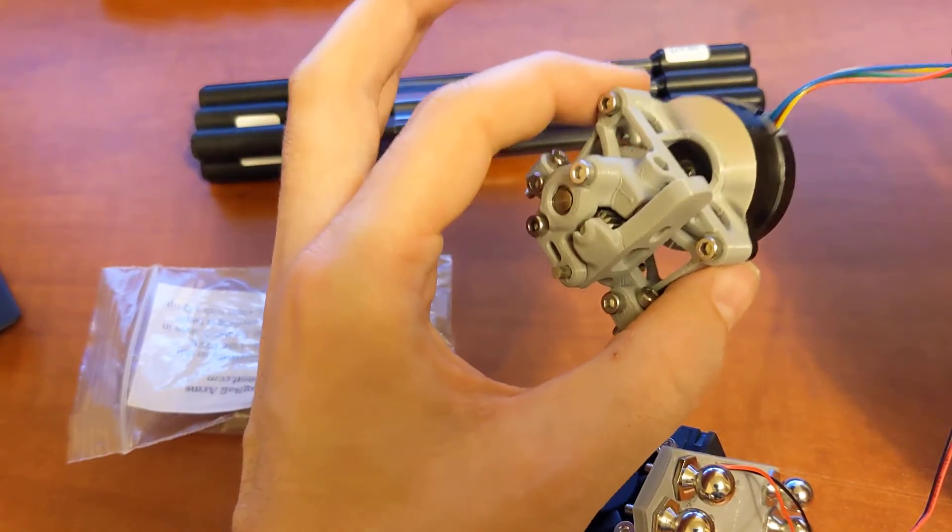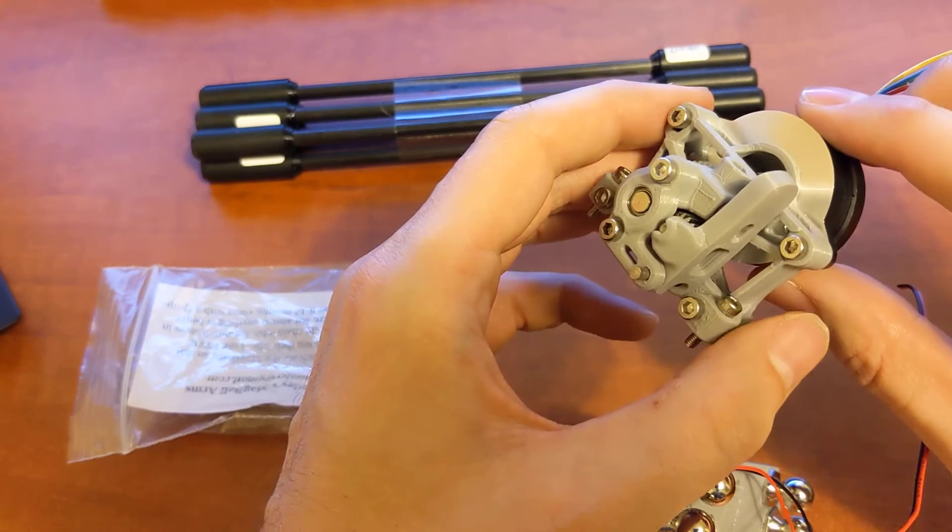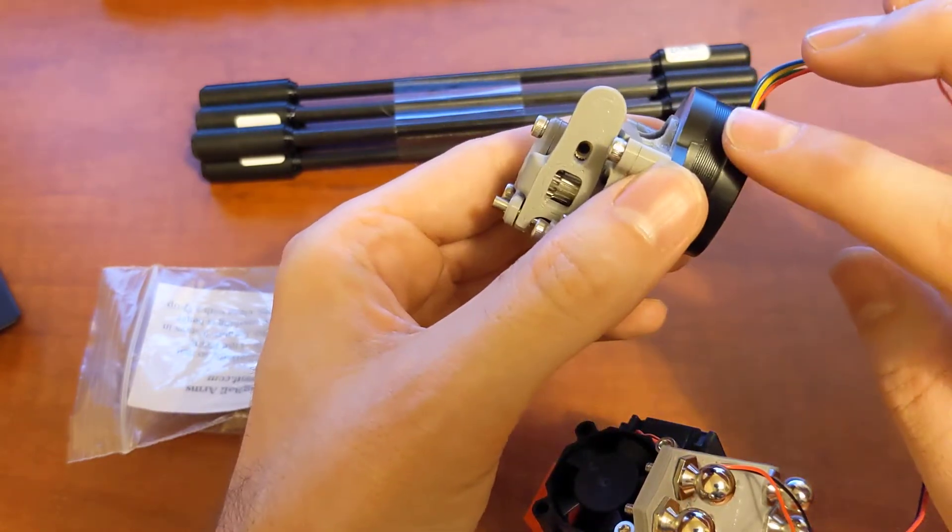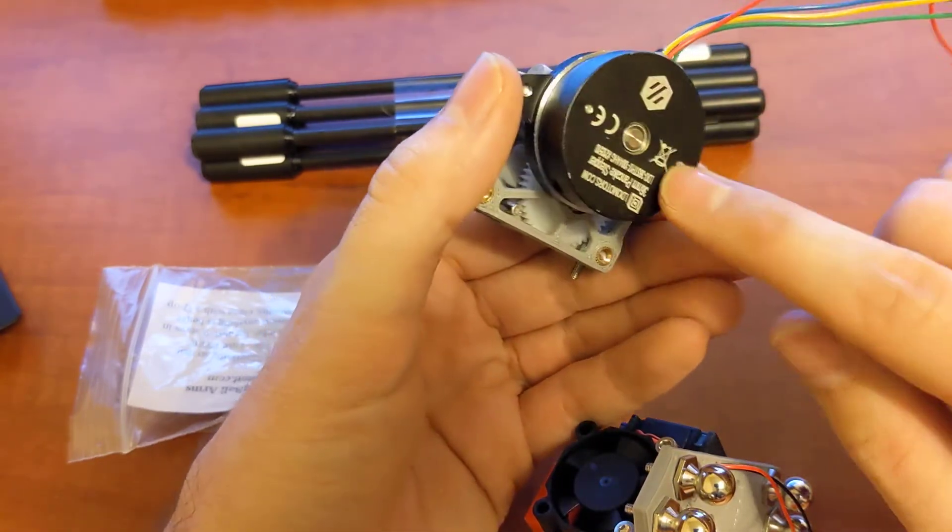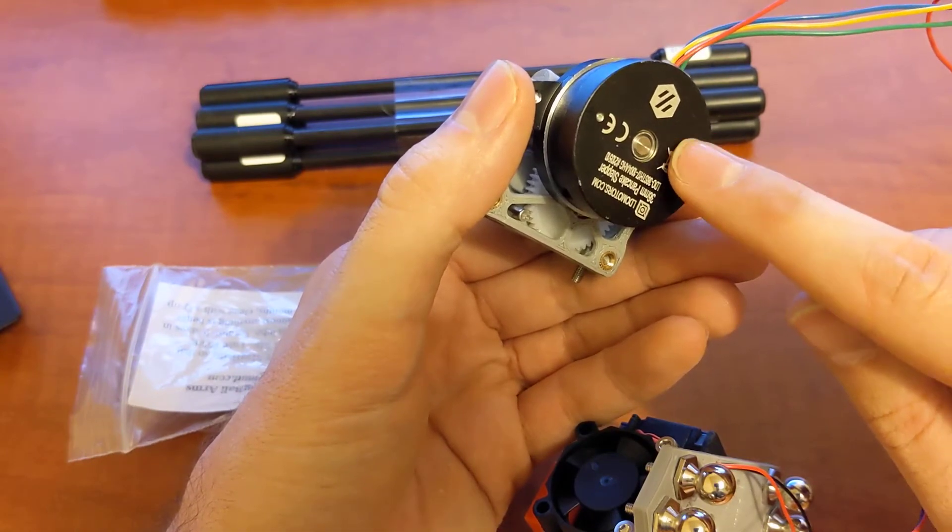So this is, I believe, the lightest direct drive extruder you can get. It only weighs like a little over 100 grams. It's very light due to this motor. You can't run a lot of current on this motor, about 0.25 amps I believe is generally what I run, and it seems to work just fine.